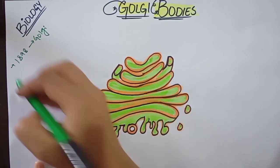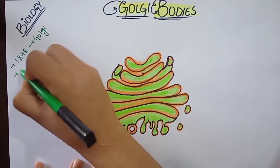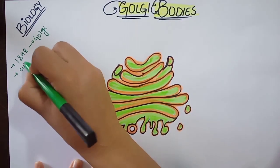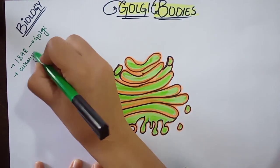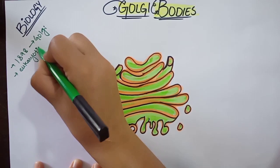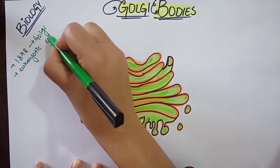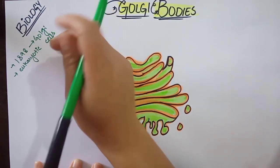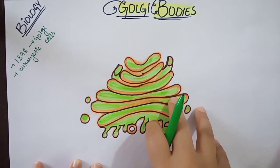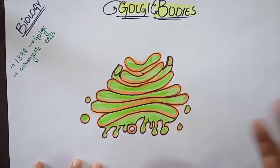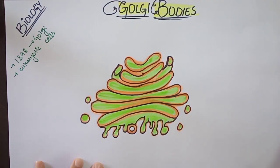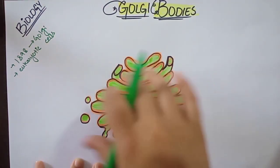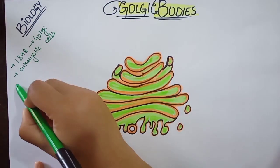Golgi bodies are present within the eukaryotic cells. They are not present within the prokaryotic cells. What eukaryotic cells are has already been discussed in the previous video, so we won't spend time on it here.